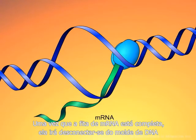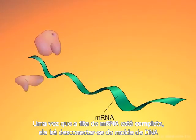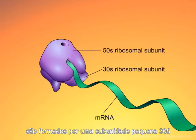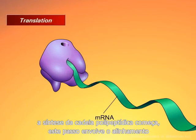Once the strand of mRNA is complete, it will detach from the DNA template and in turn become attached to ribosomes. Bacterial ribosomes are made of a small 30S and a large 50S subunit. After the two subunits join together around the strand of mRNA, synthesis of the polypeptide chain begins.